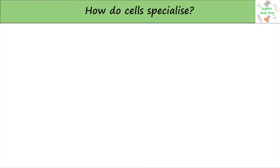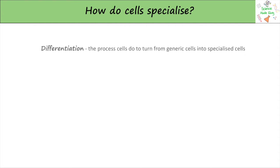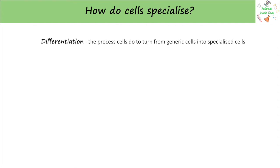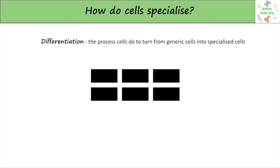Most cells in multicellular organisms are specialized, meaning they're adapted in some way to be good at a particular function. The process cells go through to become specialized is called differentiation. To do this, cells turn off certain genes to help change and enable them to complete a specific job.